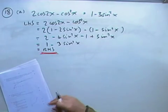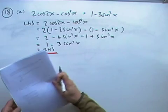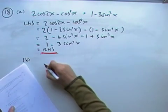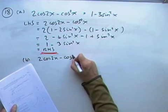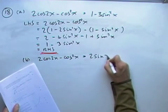Part B. It says, hence, in bold, solve this equation. 2cos2x minus cos squared x equals 2sinx.